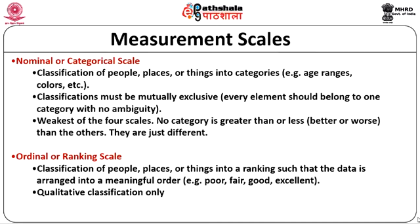The classification done with the help of a categorical label should be mutually exclusive — every element must belong to exactly one category without any ambiguity. We cannot have any data falling in more than one category; it will be ambiguous when one data has two different labels. This type of measurement scale is considered the weakest among the four scales. When working with nominal or categorical scale data, we must be very careful because repeating labels for data may lead to misconceptions.